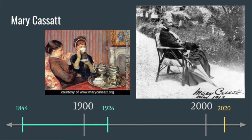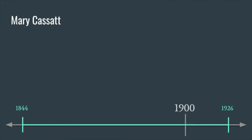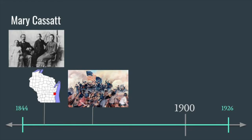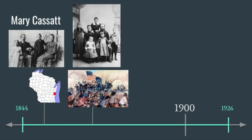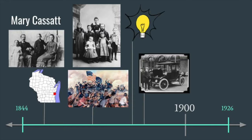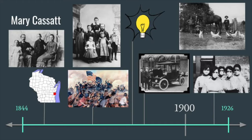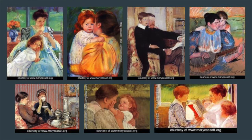Mary Cassatt lived from 1844 to 1926. In her lifetime, photography was new and in black and white. Wisconsin became a state. The Civil War happened. Families were usually bigger and more women stayed home to raise children. Electricity was invented. Automobiles were invented. More people lived on farms. And later in her life, there was an outbreak of a flu virus that made people have to socially distance and stay at home to not get sick. In Mary Cassatt's paintings, we see what everyday life activities looked like during her lifetime.